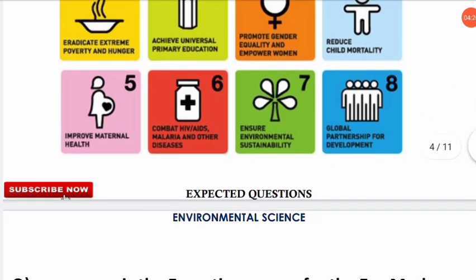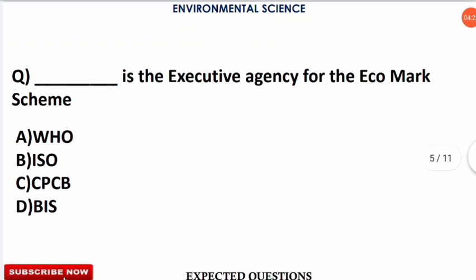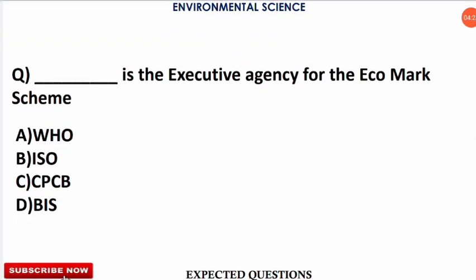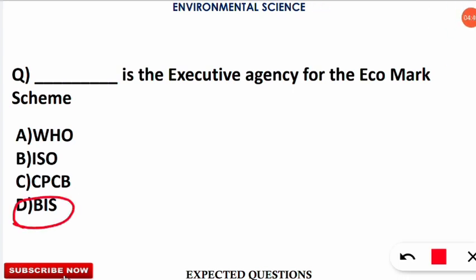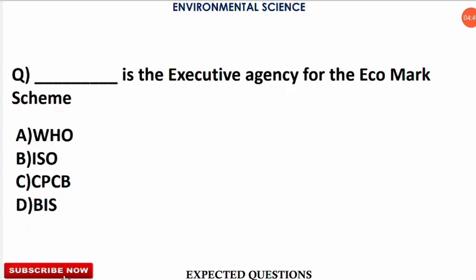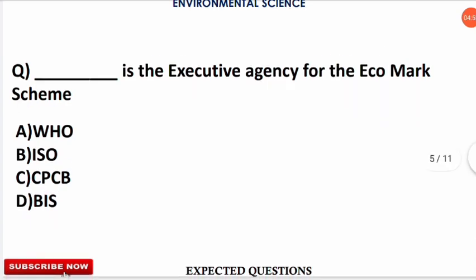The next question is: which is the executive agency for the Eco Mark scheme? The options are WHO, ISO, CPCB, or BIS. The correct answer is option D — BIS, the Bureau of Indian Standards, is the executive agency for the Eco Mark scheme. The eco-labeling mark for our country is called Eco Mark.